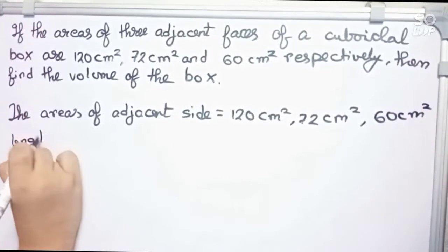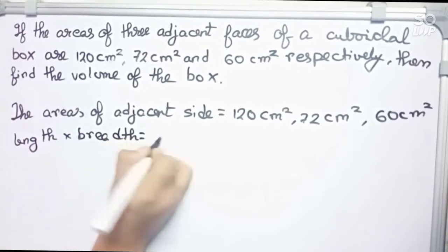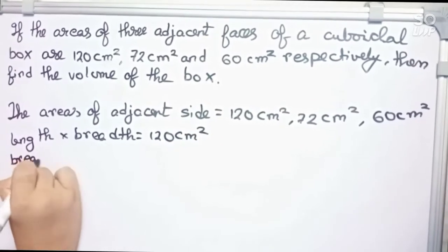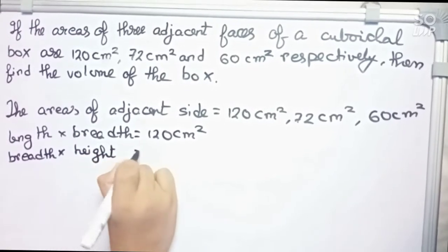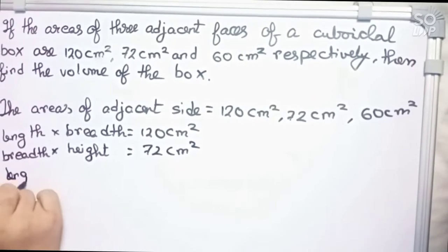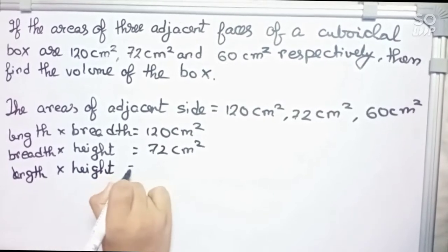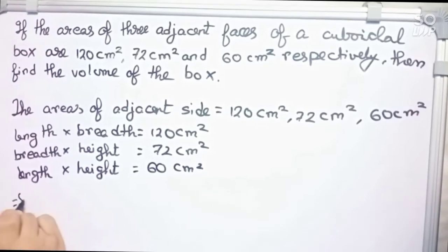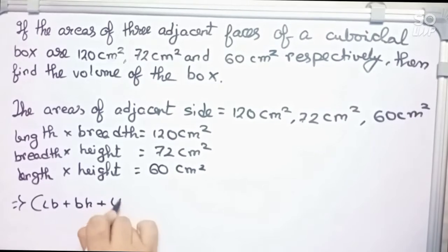So we can write: length into breadth equals 120, breadth into height equals 72 centimeters square, and length into height equals 60 centimeters square. Therefore it becomes: lb times bh times lh equals 120 into 72 into 60.